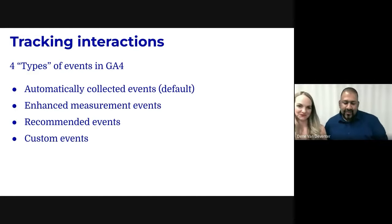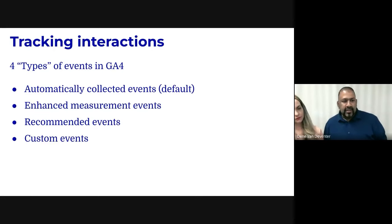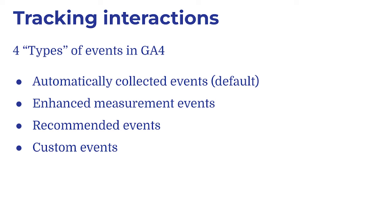We're going to focus on GA4. There are four types of events in GA4. First, automatically collected events — your default ones. Second, enhanced measurement — a feature that lets you use GA4 without making any code changes. Third, recommended events — Google's best practices. And fourth, custom events, which a lot of people are interested in.